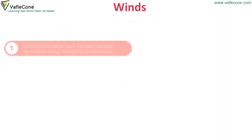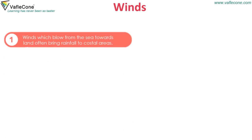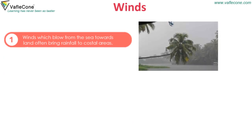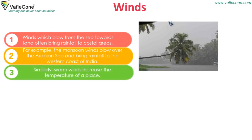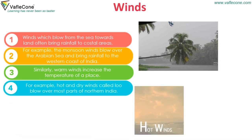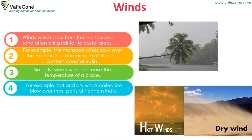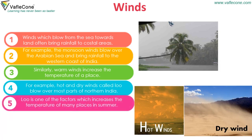Winds which blow from the sea towards land often bring rainfall to coastal areas. For example, the monsoon winds blow over the Arabian Sea and bring rainfall to the western coast of India. Similarly, warm winds increase the temperature of a place. For example, a hot and dry wind called Loo blows over most parts of northern India. Loo is one of the factors which increases the temperature of many places in summer.